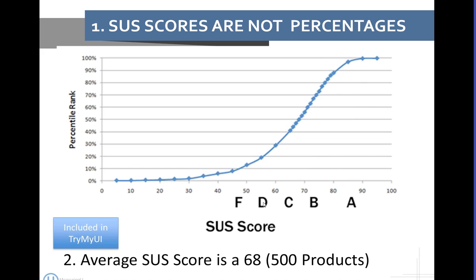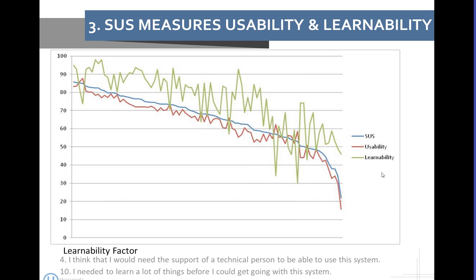The average SUS score turns out to be 68 — that's the second thing you know about SUS. This is one of the advantages of this being an open-source scale: over the years people have published their scores on a number of products — hardware, software, mobile phones. We looked at those 500 products and found that the average score is 68. Pretty much all the action happens between about 60 and 80. You go from a below-average product — roughly a D or C minus — up to an A minus or A. This graph allows you to convert raw scores into something more meaningful, including percentile ranking against those 500 products.